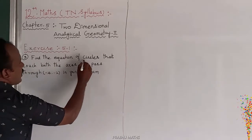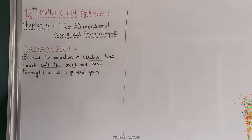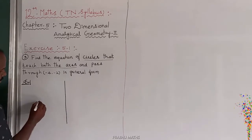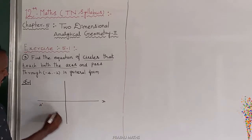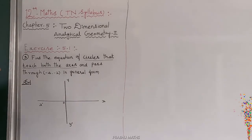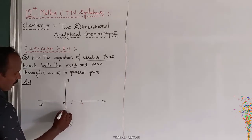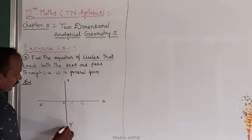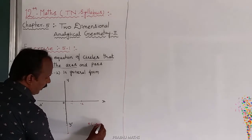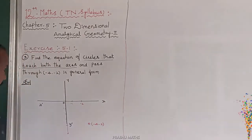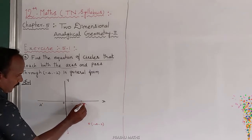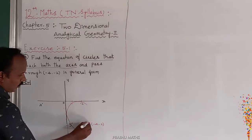The important point is the circle touches both axes — that is the given condition. Let us take the graph sheet with x and y axes. The circle is passing through the point minus 4 comma minus 2, which is in the third quadrant. The circle touches the first axis and the second axis, and also passes through that point.